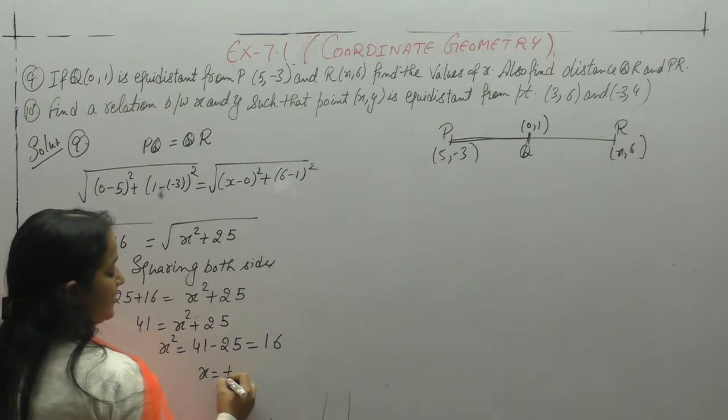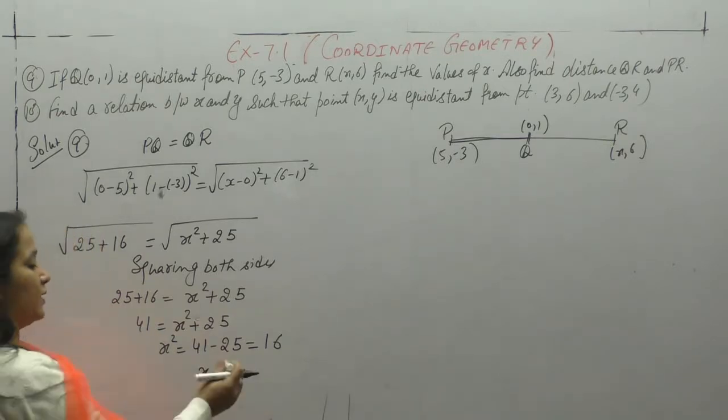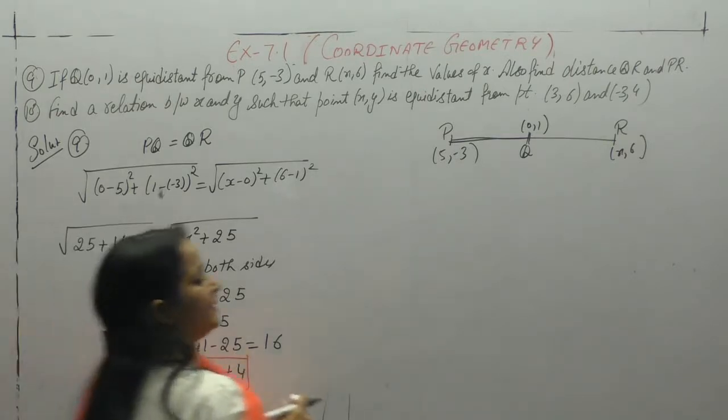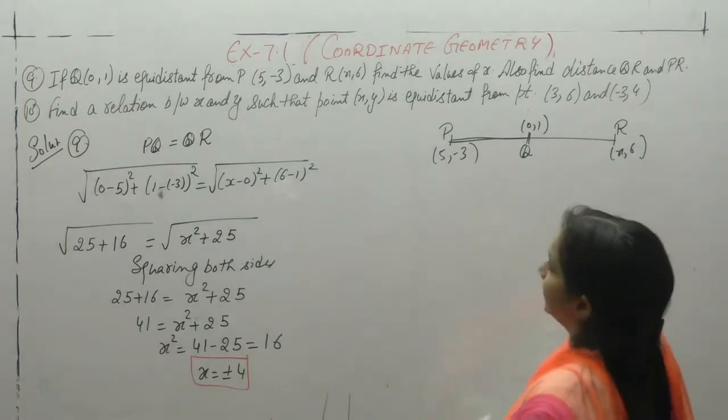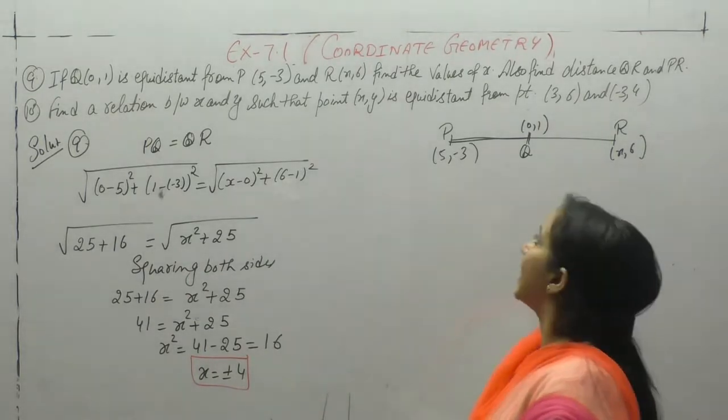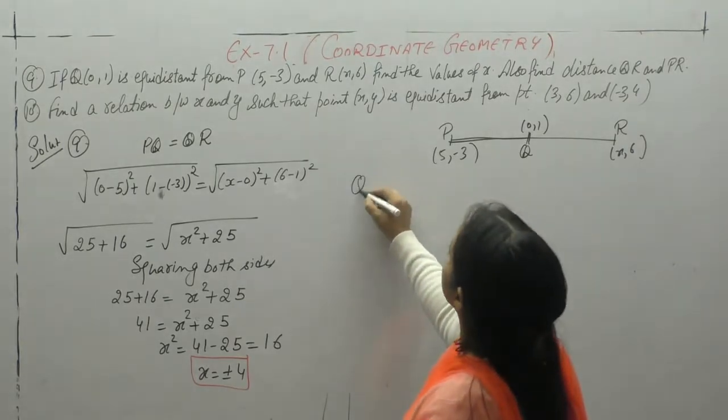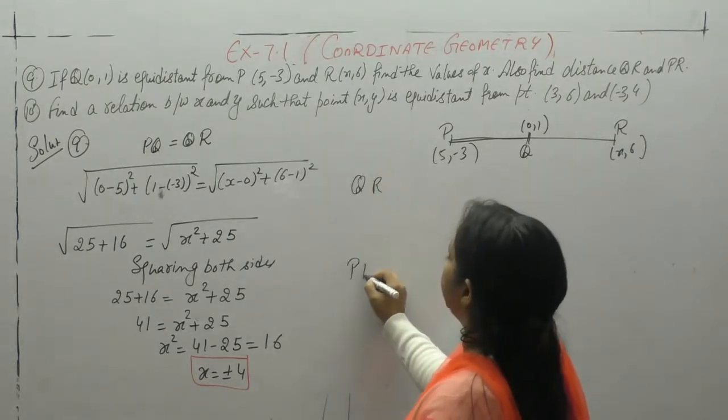So x is plus minus 4. We found x value, plus minus 4. What we need to find? Find the values of x. Also find the distance QR and PR.